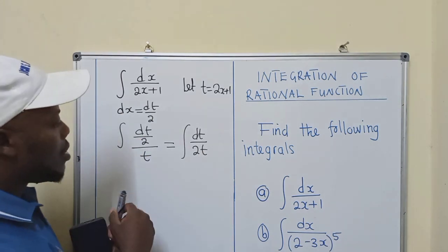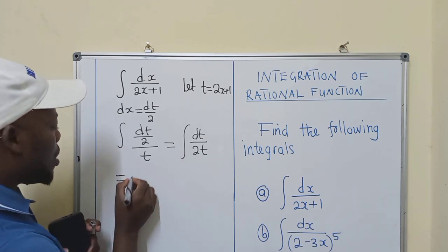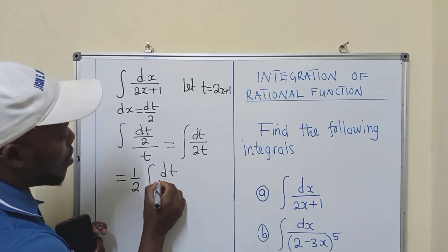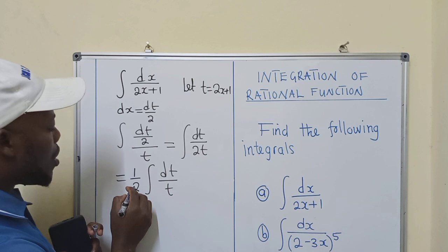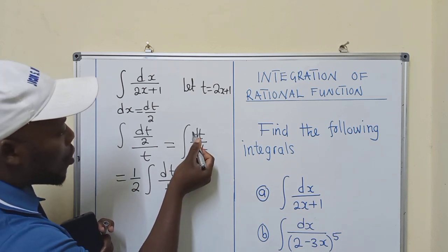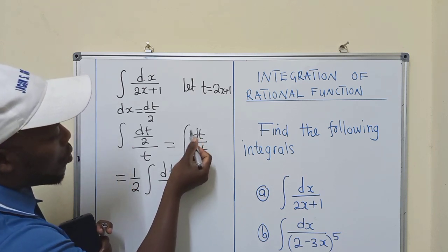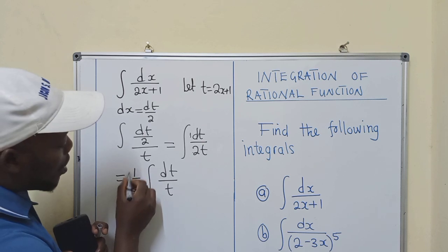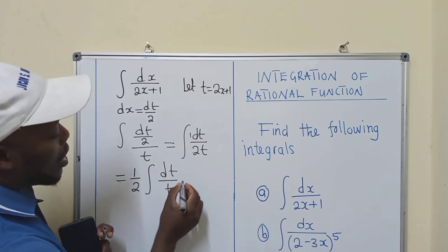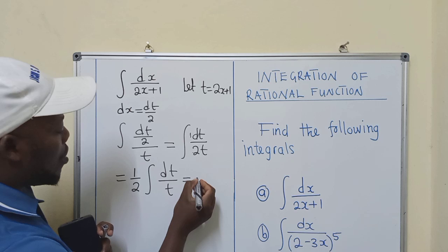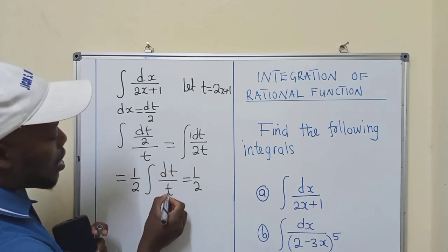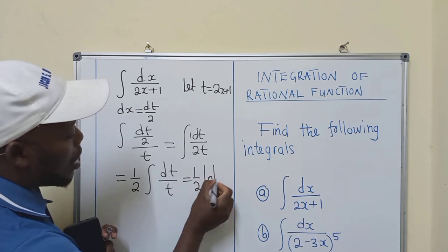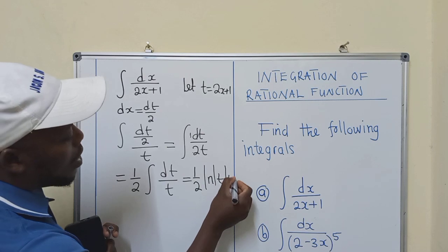So now we can integrate this. And to integrate this, we shall have 1 over 2 outside dt over t. So where is this 1 over 2 coming from? It's as a result of getting this 1. We know here there's a 1 on top and a 2. You factor them out. You put them outside the integral sign.